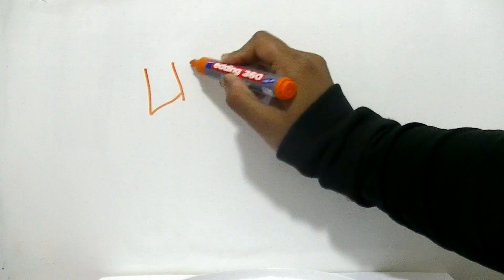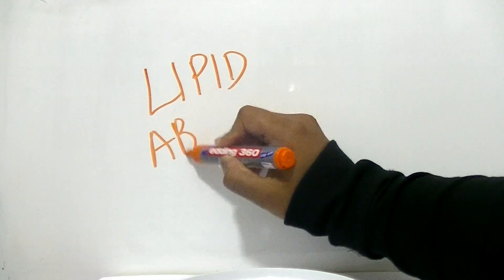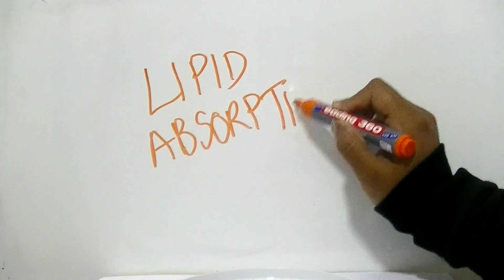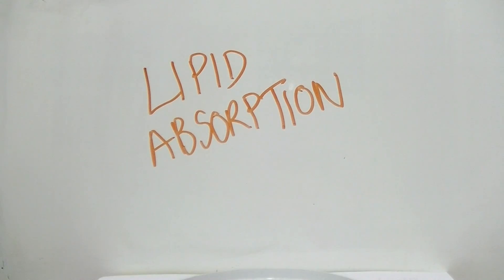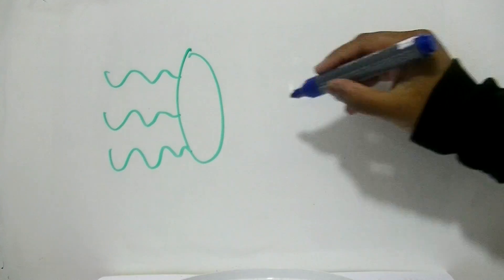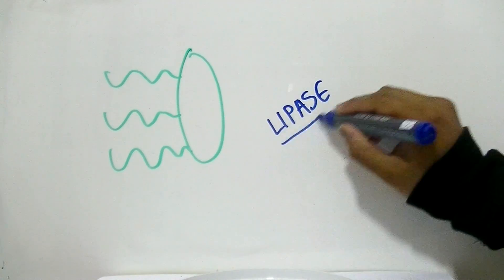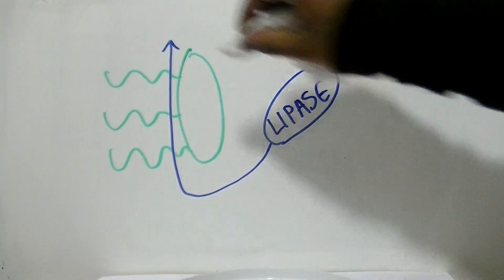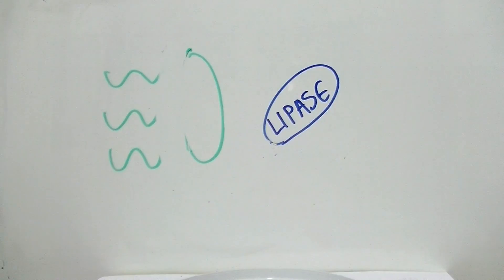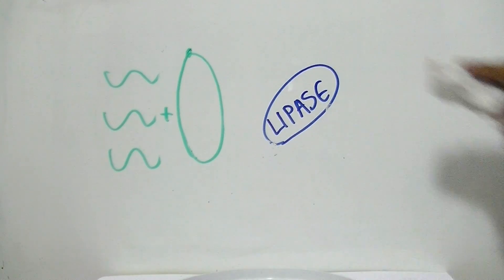Today we'll be looking at lipid absorption. First of all, triglycerides are converted into monoglycerides and fatty acids when an enzyme, lipase, hydrolyzes them. The ester bond between the monoglyceride and the fatty acids is hydrolyzed.